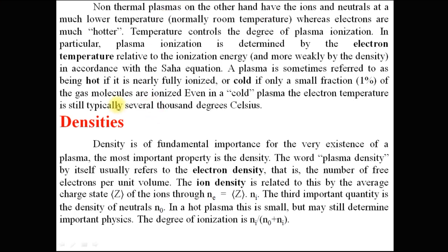The other important parameter is density. There are three different species in plasma: electrons, ions and neutrals. Generally, plasma density refers to electron density and is denoted by Ne. The ion density is denoted by Ni and the neutral density by N0. The relation between ion density and electron density is given by Ne equal to Z into Ni, where Z is the average charged state of the ions. The degree of ionization is given by Ni upon N0 plus Ni.